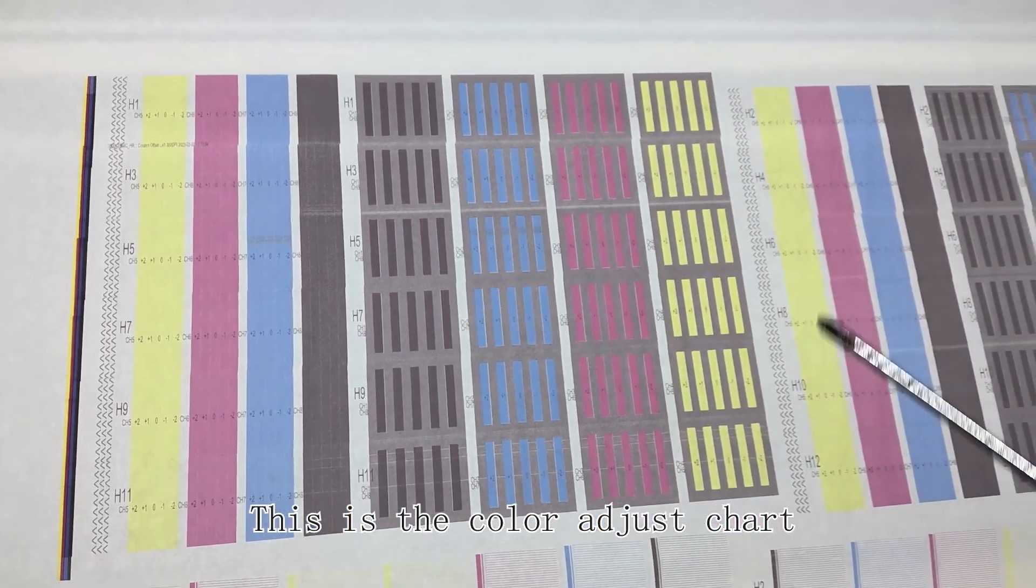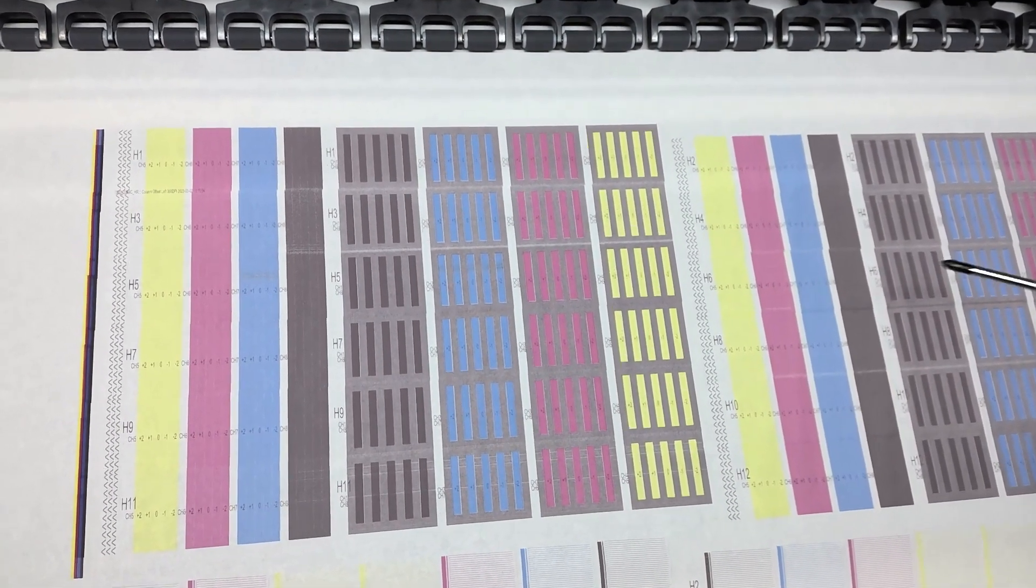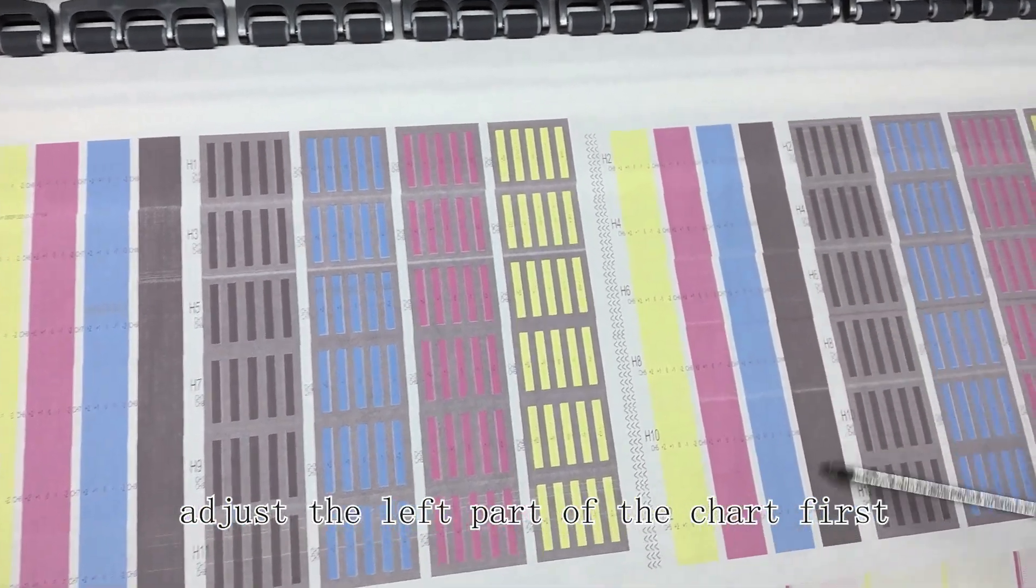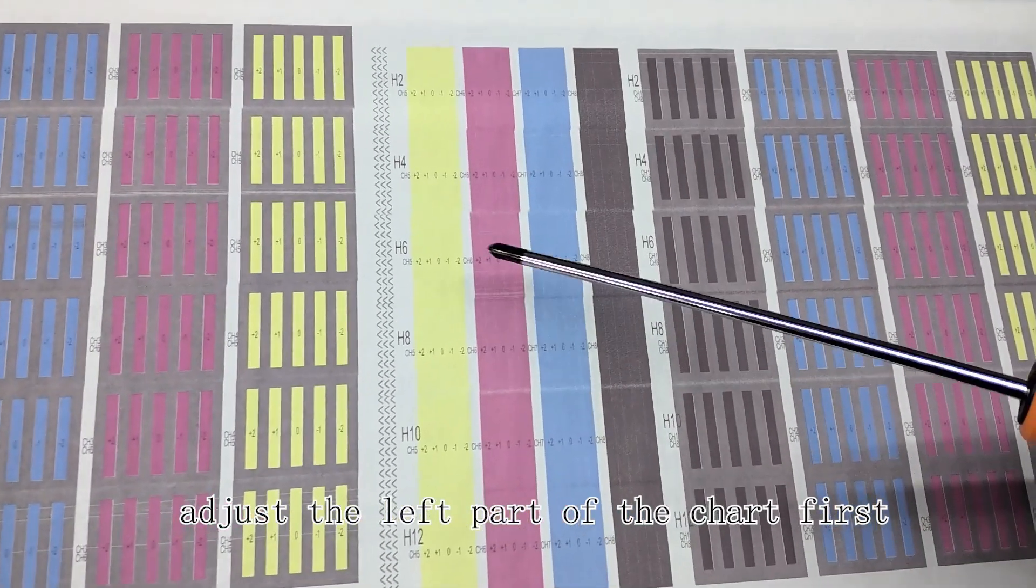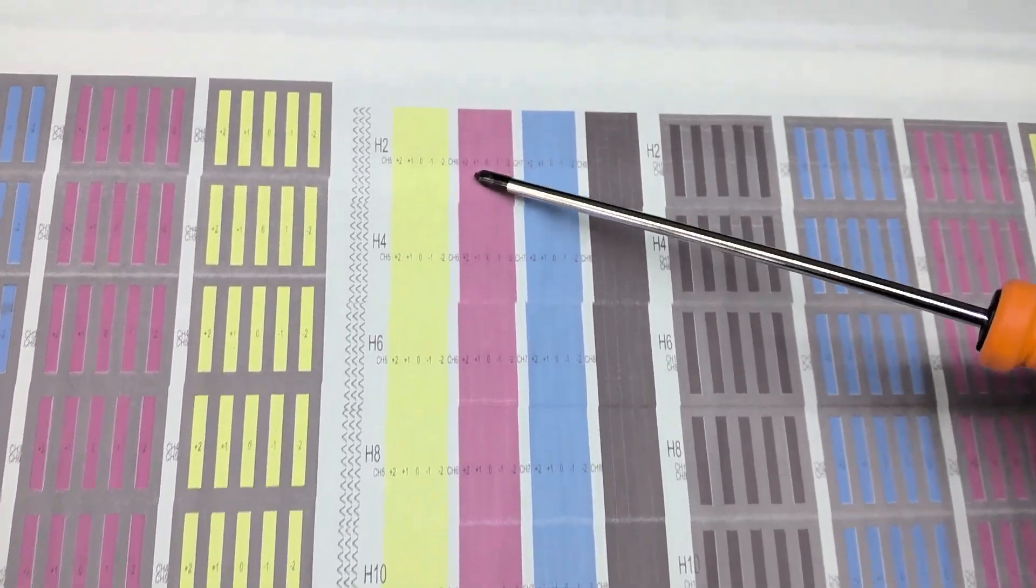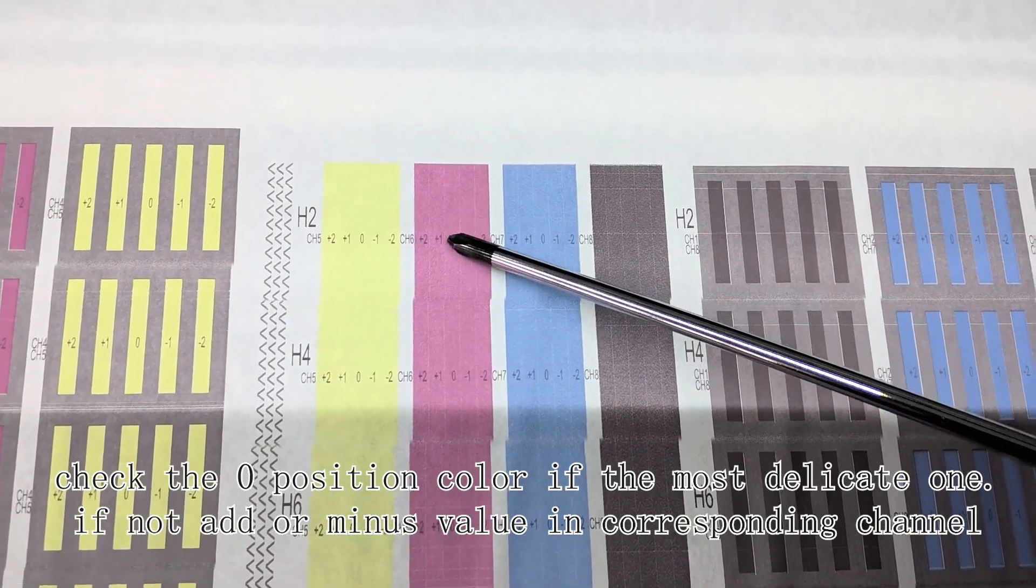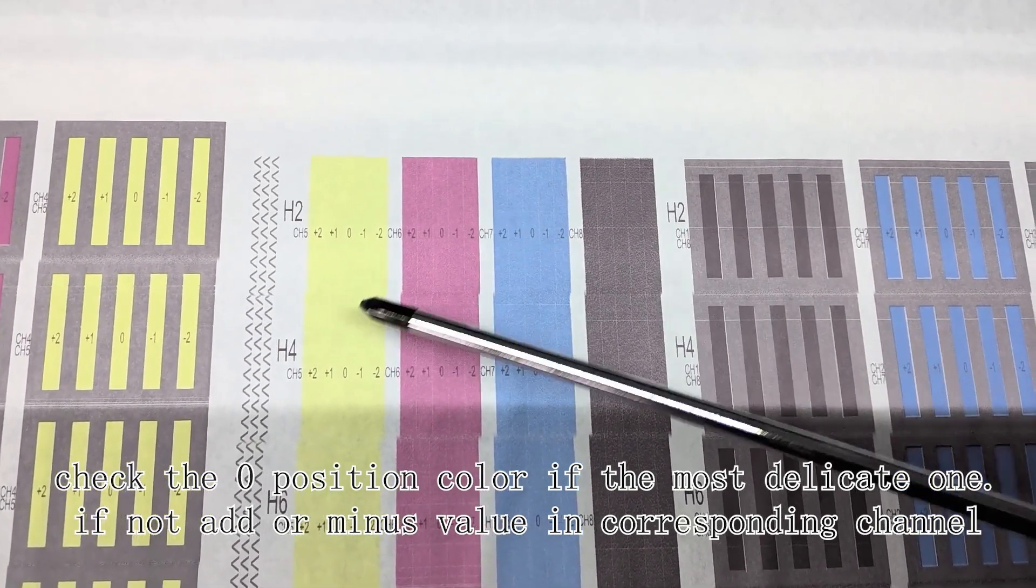This is the color adjust chart. Adjust the left part of the chart first. Check the position color if it's the most delicate one. If not, add or minus value in the corresponding channel.